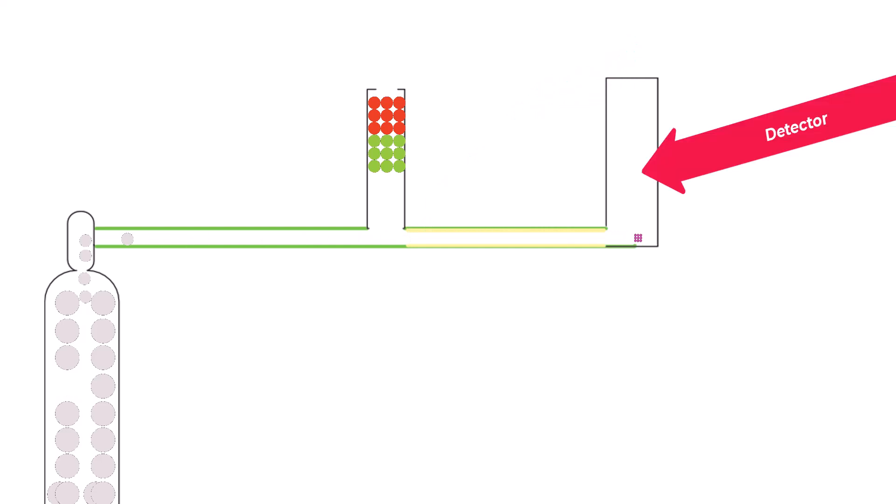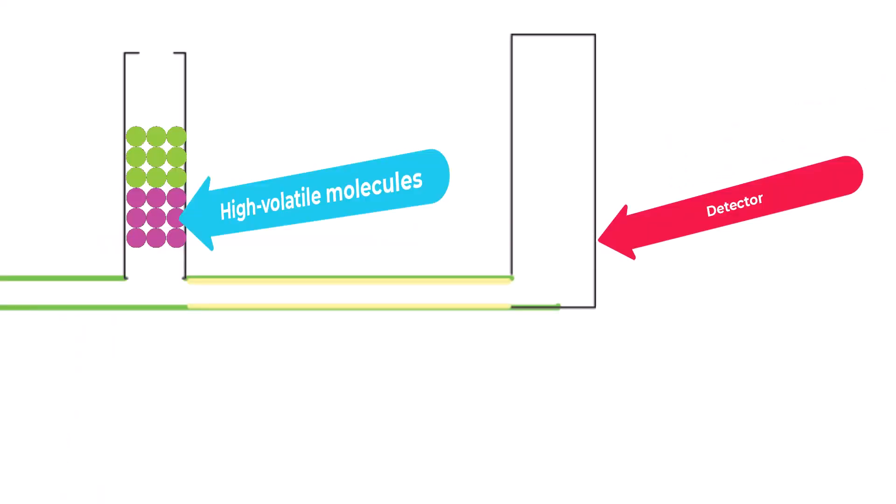So the mobile phase acts as a carrier in gas chromatography. High volatile molecules show more affinity toward the mobile phase. So they move faster and reach the detector first.